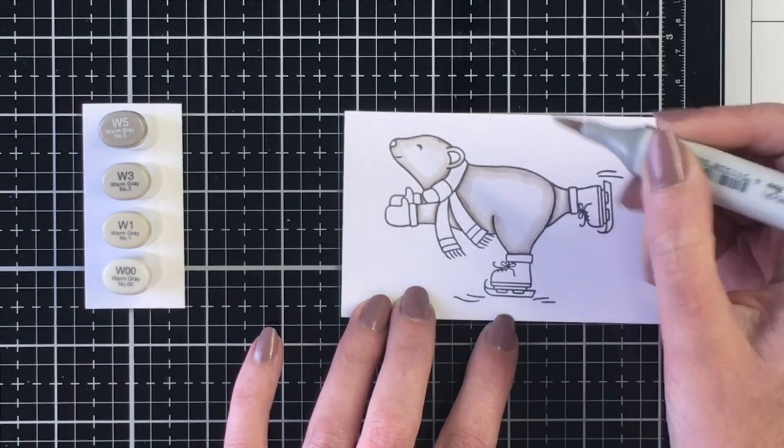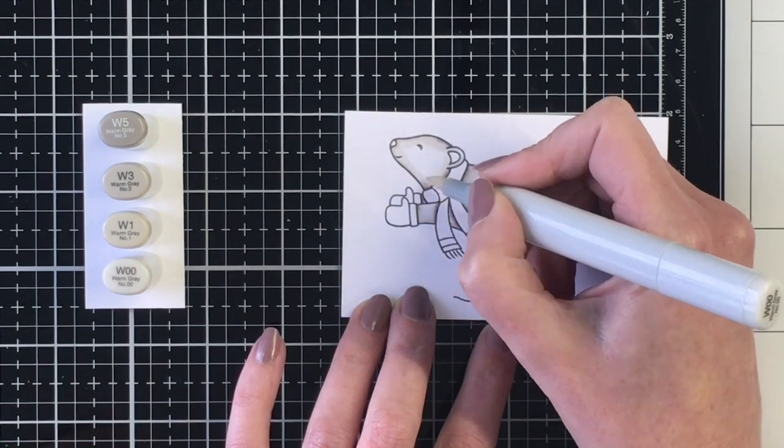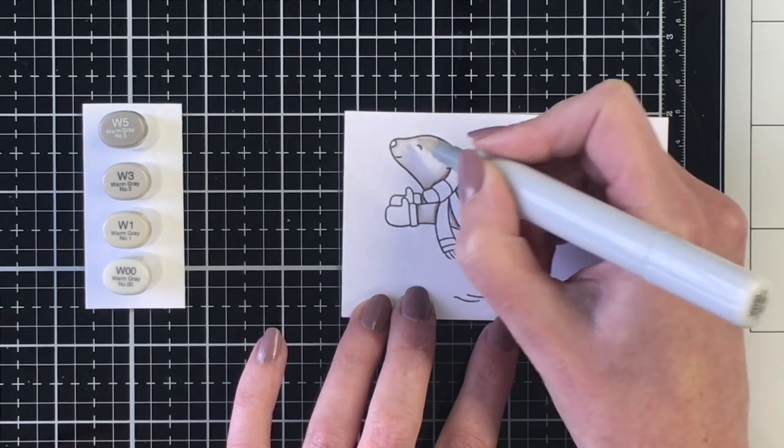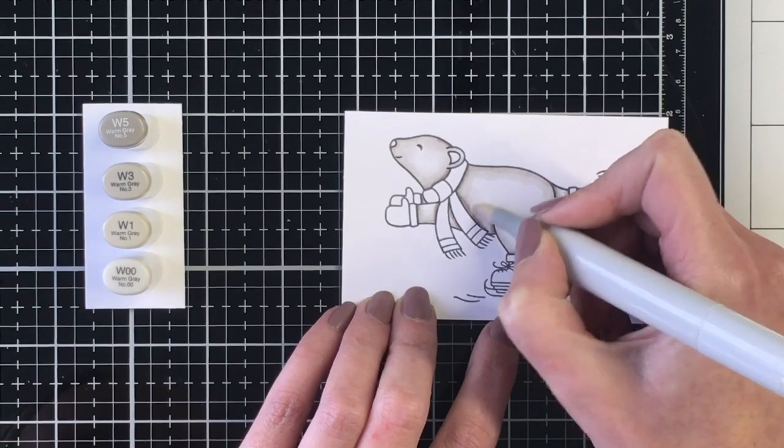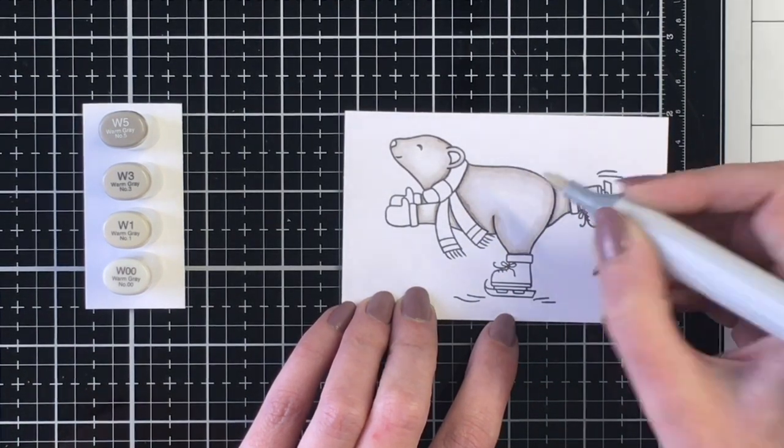So once I had that darkest marker in, I went ahead and blended that out with the W3 and then worked my way down. I did leave some white space in the center just so that he does look like a white polar bear and not a brown polar bear.